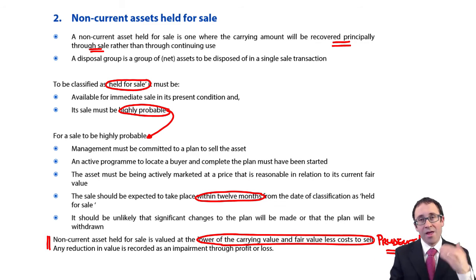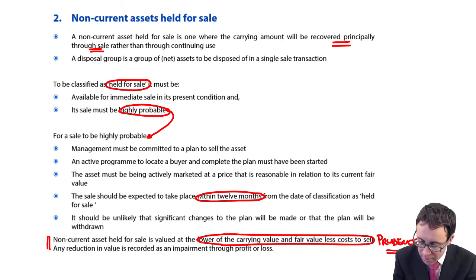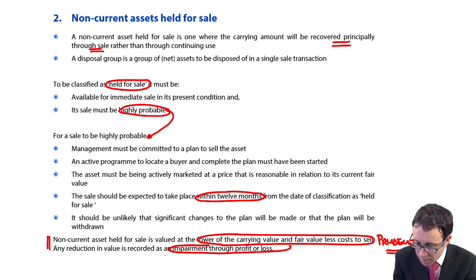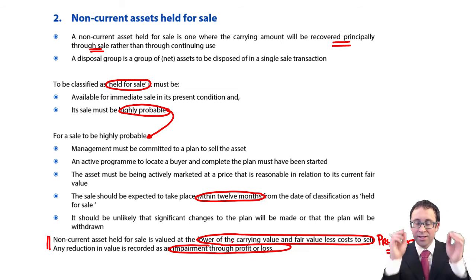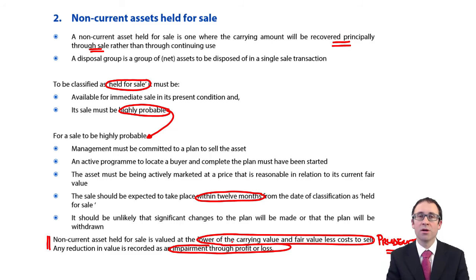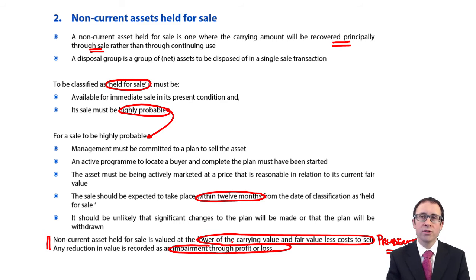That reduction in value is recognized as an impairment, and that impairment goes through profit or loss.